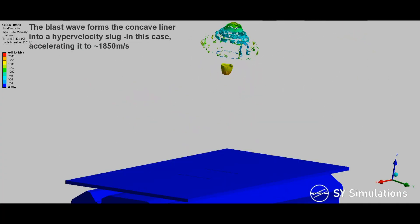The blast wave forms the concave liner into a hypervelocity slug, in this case accelerating it to around 1,850 meters per second.